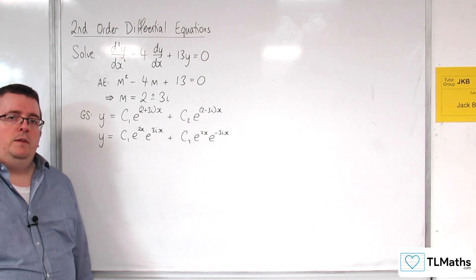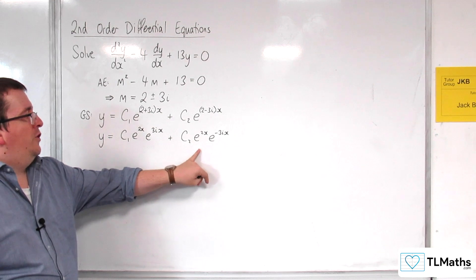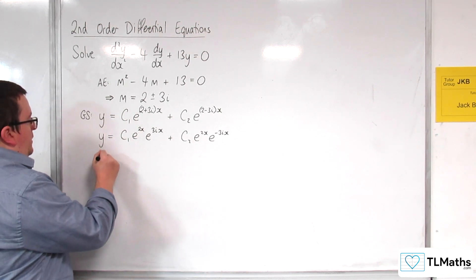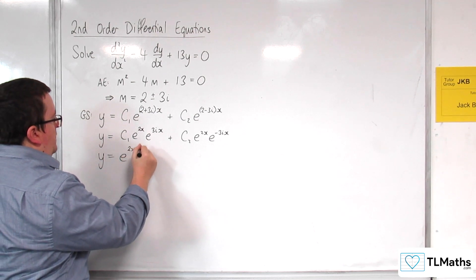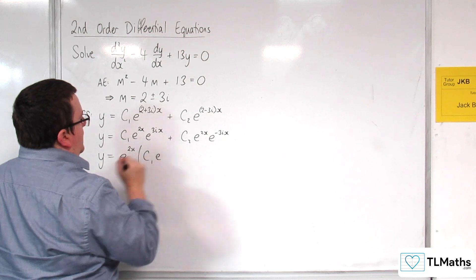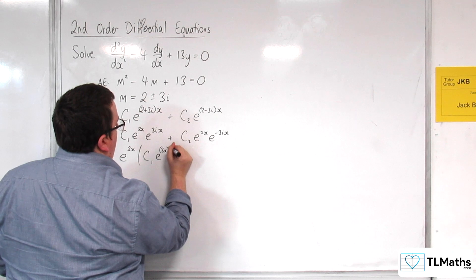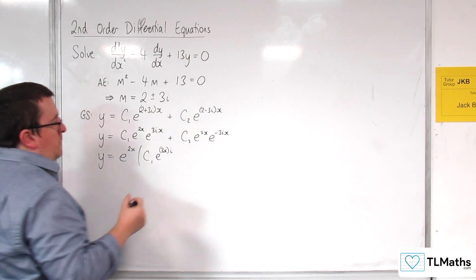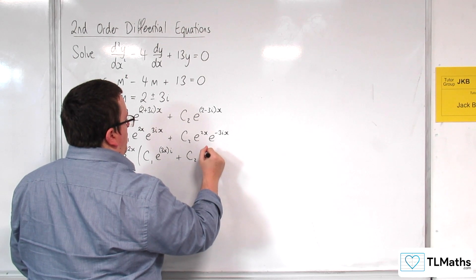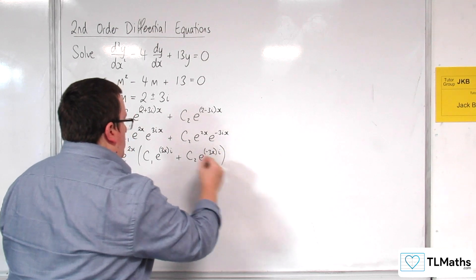Right, now of those two you can see that we've got this common factor of e to the 2x, so I can pull that outside and factorise this. So e to the 2x can come out the front, and I'll have c1 e to the power of, now I'm going to write it as 3x in a bracket times i, then plus c2 e to the power of minus 3x in a bracket times i, close the big bracket.